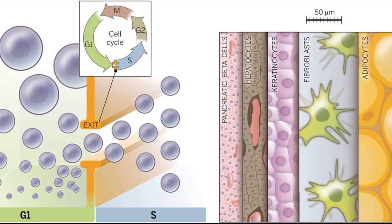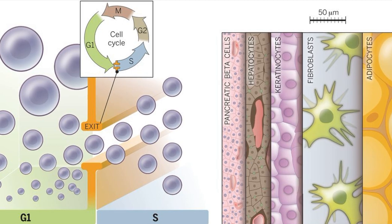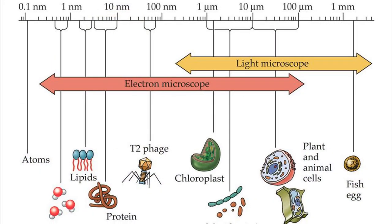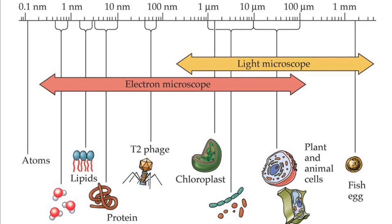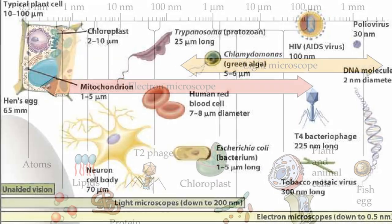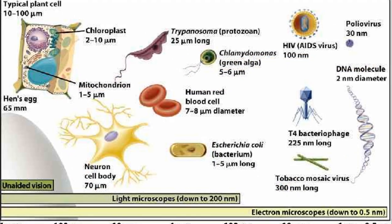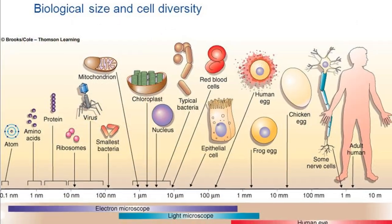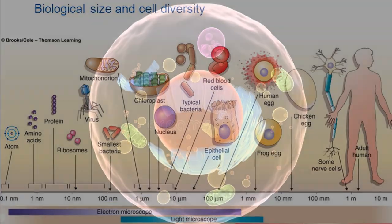Size – The size of the cell ranges from one-tenth to one-thousandth of a millimeter. Cells are generally microscopic, but certain cells, like the nerve cell in an elephant, have been found to measure up to one meter.